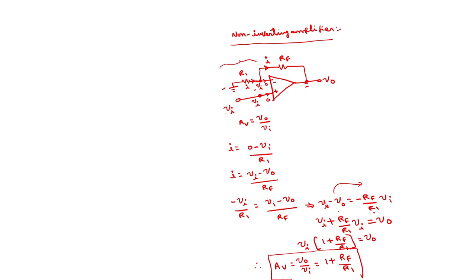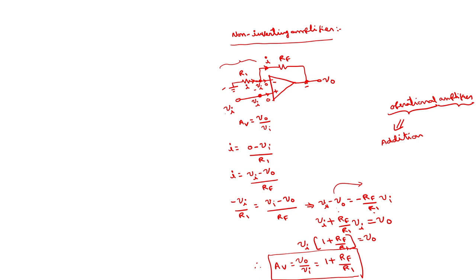This is the expression for the voltage gain of the non-inverting amplifier: AV equals 1 plus RF/R1. We can extend this concept to realize an adder circuit. As the name 'operational amplifier' implies, in addition to amplification it performs mathematical operations. The different operations that can be performed include addition, subtraction, multiplication, and division.